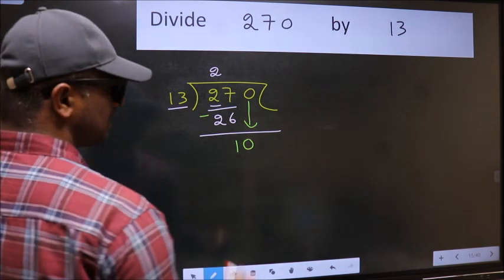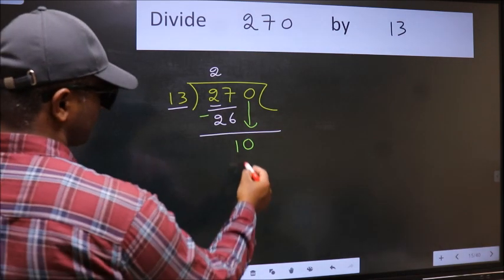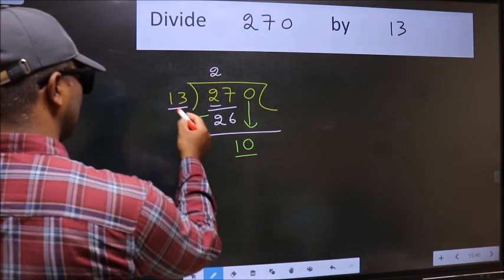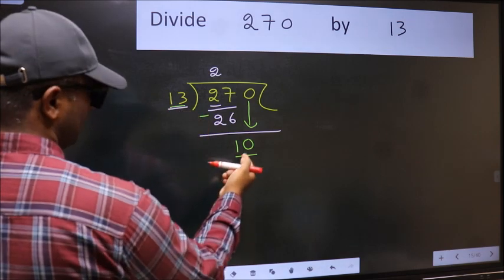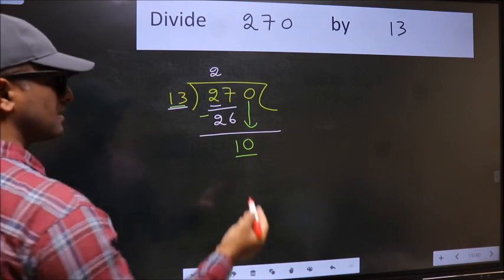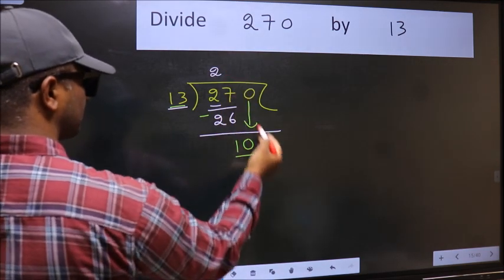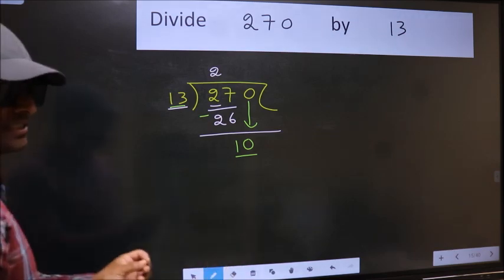After this step, the mistake happens. And the mistake is this. Here we have 10 and here 13. 10 is smaller than 13. So what many do is they directly put dot and take 0, which is wrong.